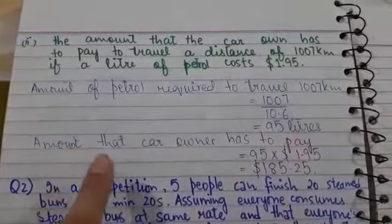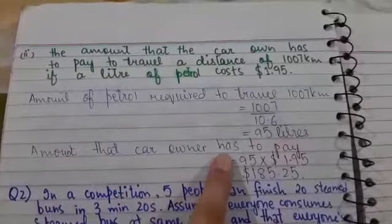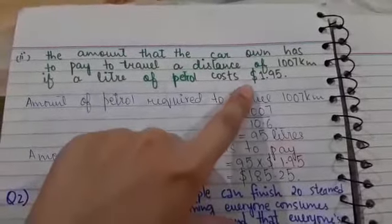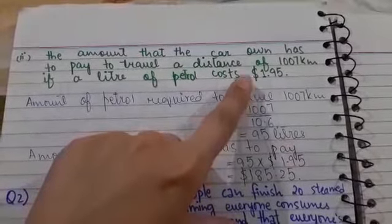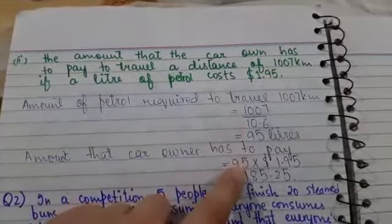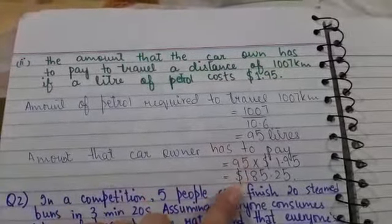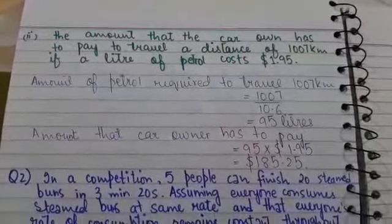Then the amount that the car owner has to pay. This is the cost for 1 liter. So we will multiply 95 by this cost, and the answer will be $185.25.